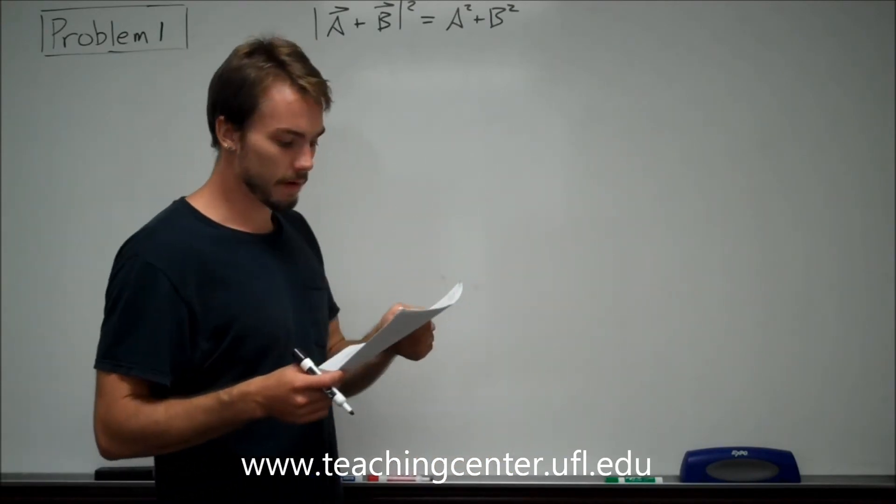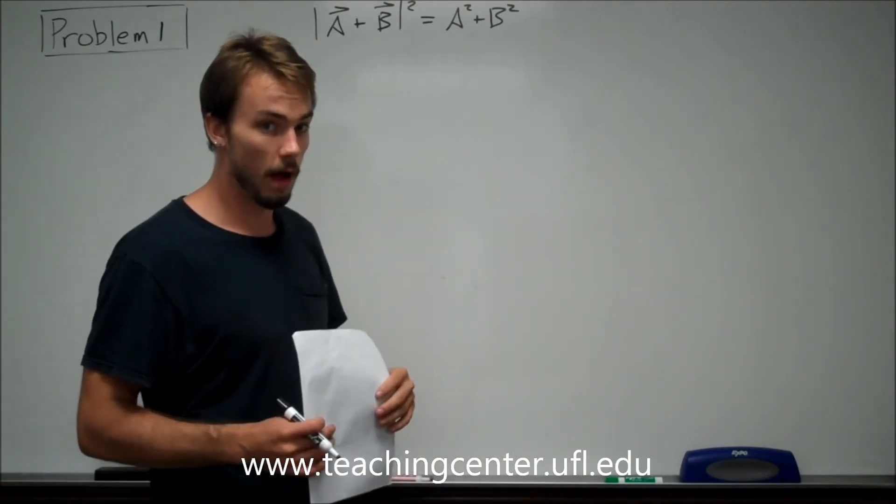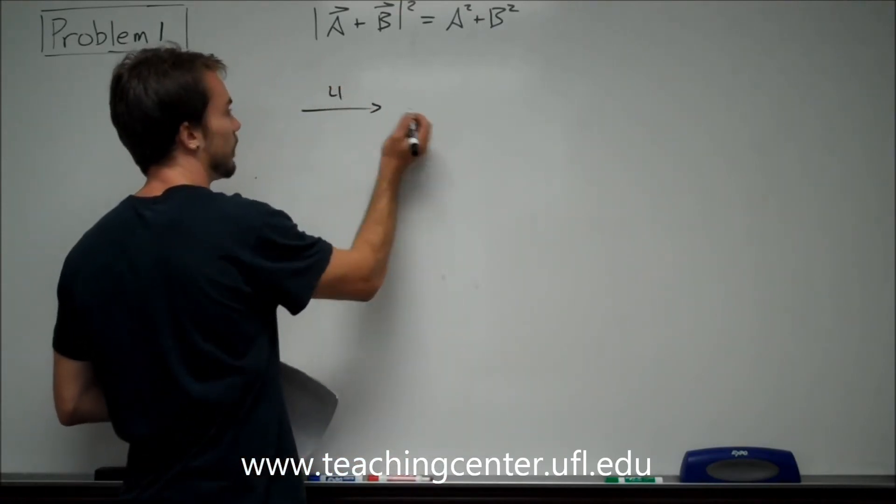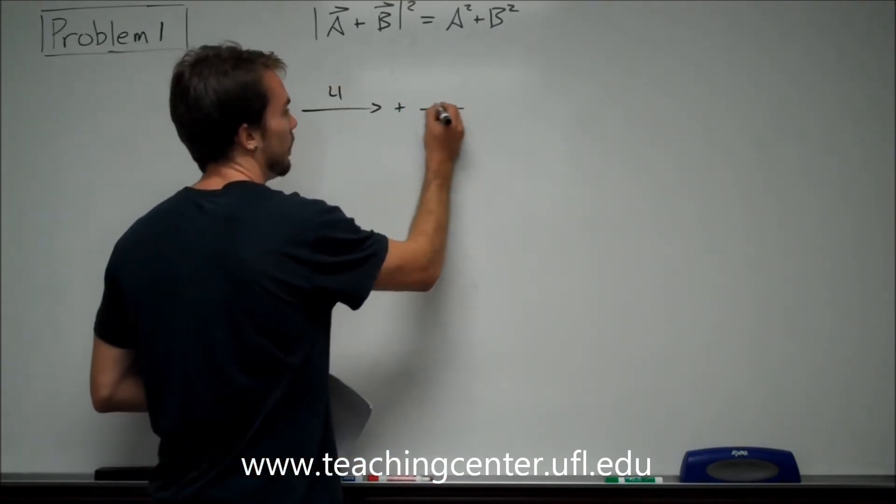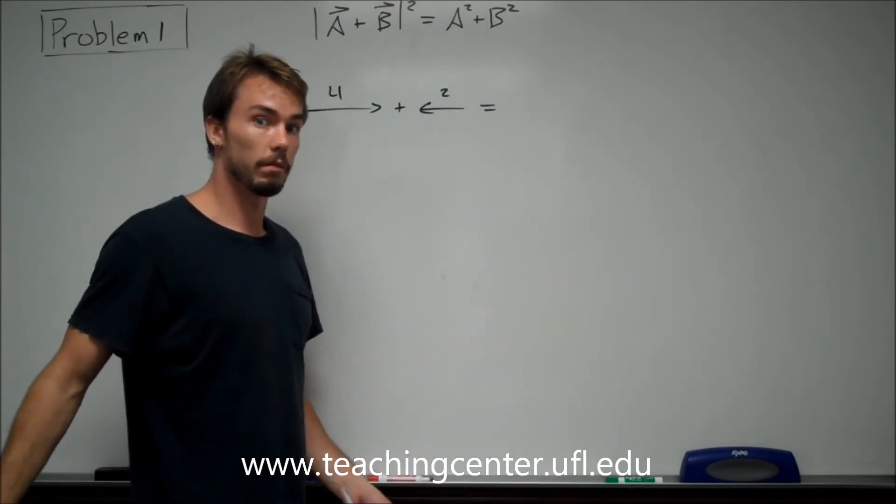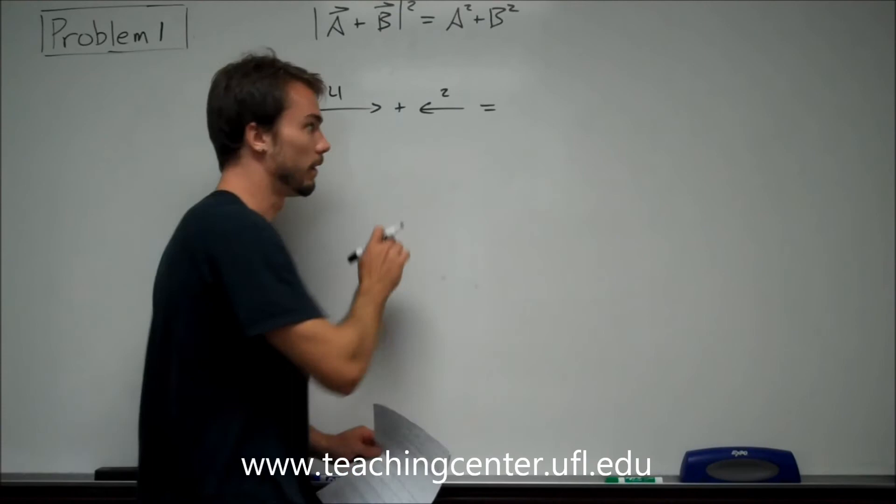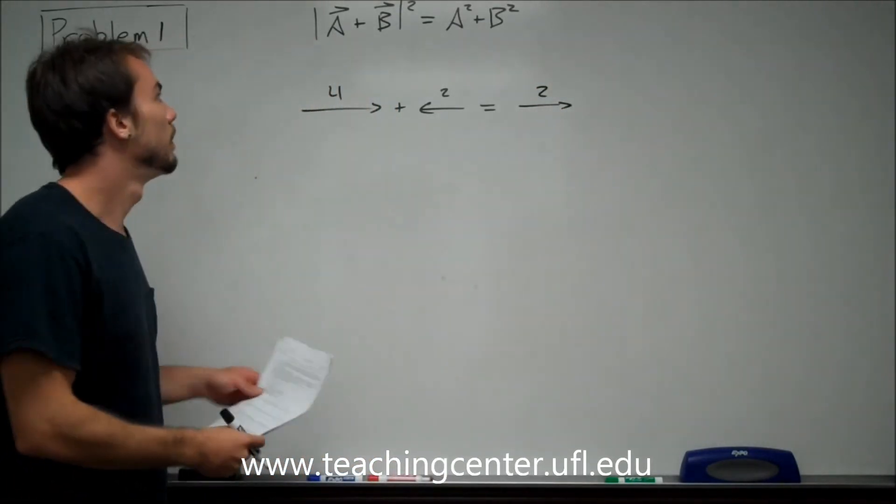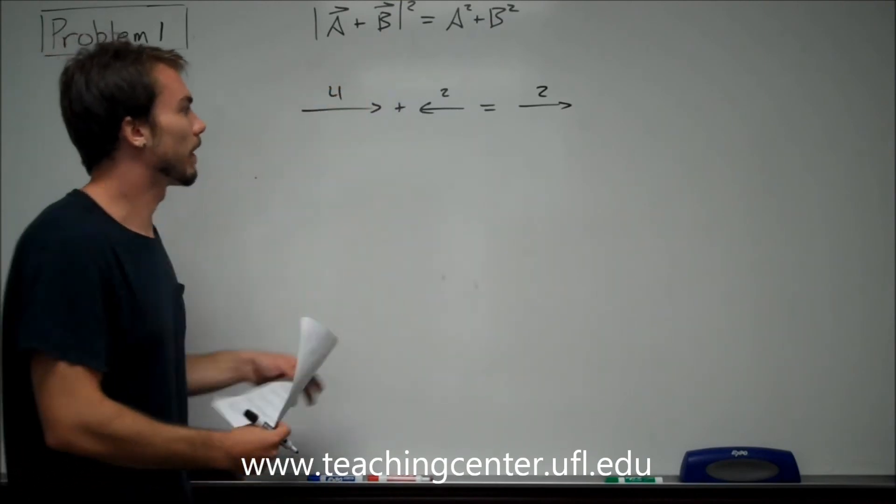Third choice says A and B must be parallel and in opposite directions. So let's keep those same nice little easy numbers. Now if you have vectors that point in the opposite direction of one another, remember they're going to subtract from one another. So we're going to end up with a vector 2 pointing to the right.